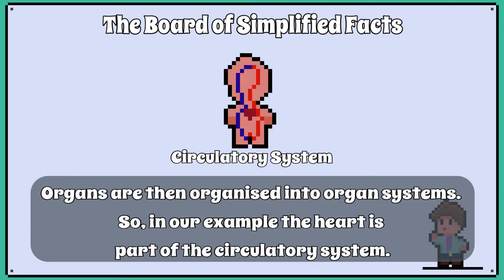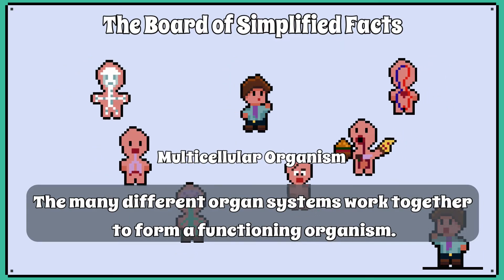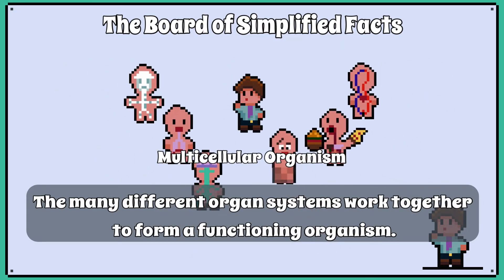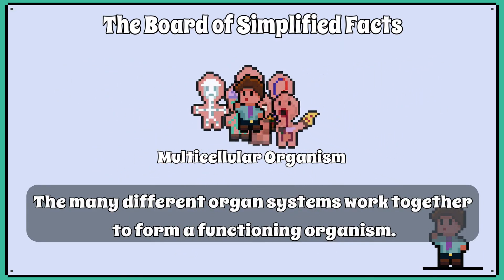Organs are then organised into organ systems. So in our example, the heart is part of the circulatory system. The many different organ systems work together to form a functioning organism.